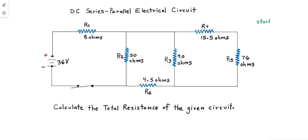The first step is to start on the right side of the circuit. We will combine R4 and R5 in series, so we just add them together. 15.5 plus 76 is 91.5.